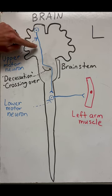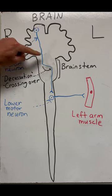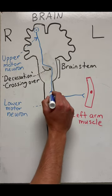The signal goes down through the brain stem and then crosses over, which is called decussation. Once it does this, it will follow the path downward, stimulating this lower motor neuron.